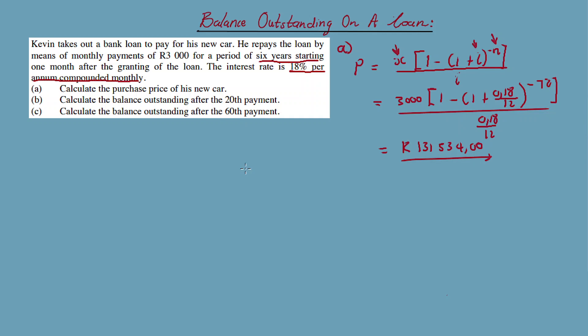Now part B. What is the balance outstanding after the 20th payment? For the 20th payment, you draw a timeline for demonstration. Starting from payment 1, 2, 3, all the way up to payment 72. If you made the loan, you make payments of 3,000 each. On the 20th payment, what is the balance outstanding after the 20th payment?